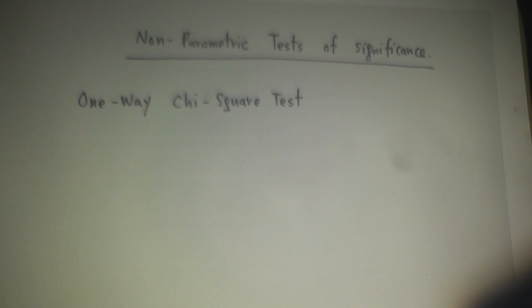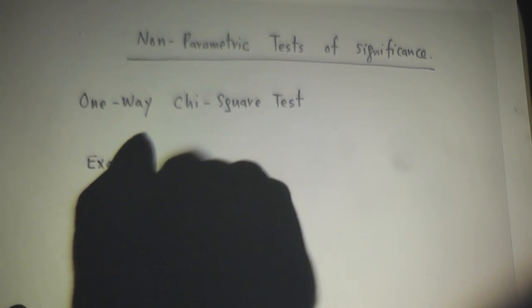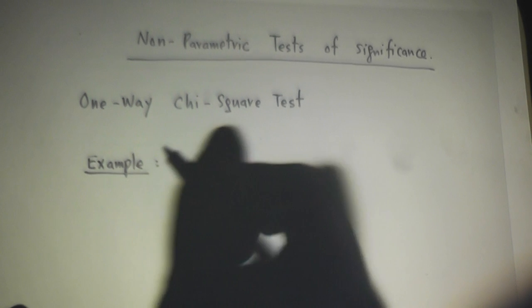Let's look at the example in my lecture notes. Suppose your instructor returns the exam and hands out the answer key. You construct a frequency distribution of the correct responses to the 50-item test as follows. This frequency table is what we call the observed frequency table.